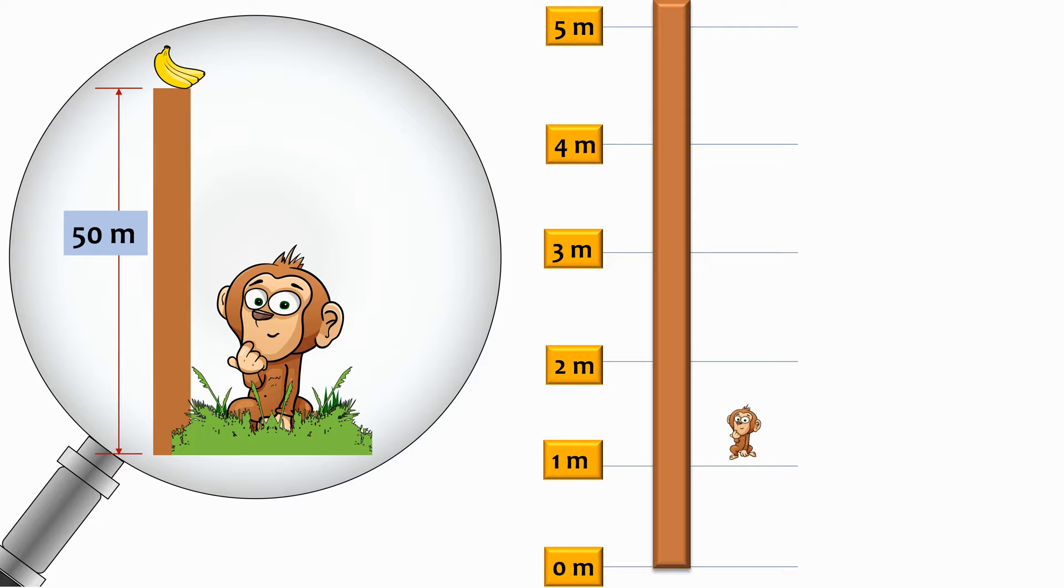Similarly, in the second hour, he climbs two, three, and four meters and slips down by two meters. This means he settles on the two meters mark. So he has climbed two meters in two hours. Basically, what it means is he climbs at the speed of one meter per hour.